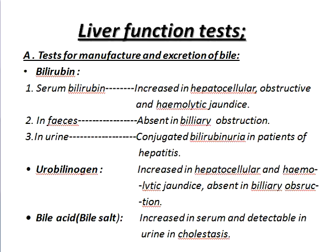Now about liver function tests — tests which we do to examine the function of the liver. Test for manufacture and excretion: to understand what things are manufactured by the liver and excreted. Serum bilirubin: increased in hepatocellular, obstructive, and hemolytic jaundice. In feces: absent in biliary obstruction. In urine: conjugated bilirubinuria in patients of hepatitis. Then about urobilinogen.